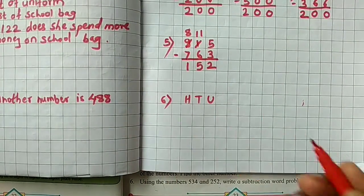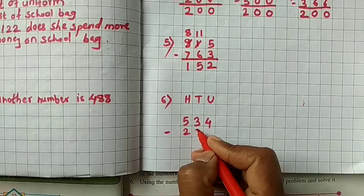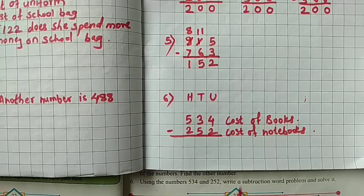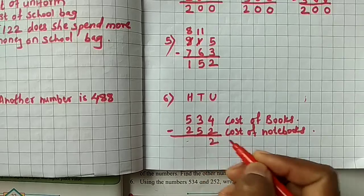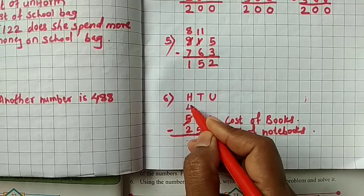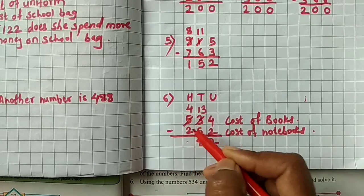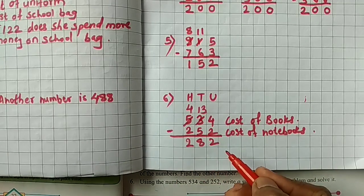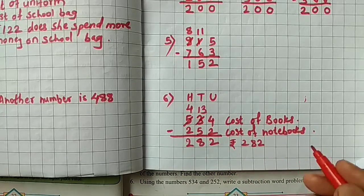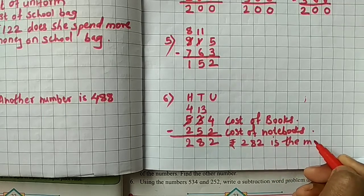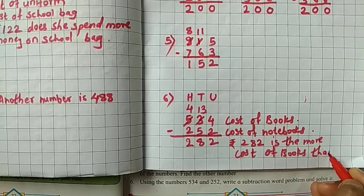Here, hundreds tens units. Now 534 minus 252. So 534 cost of books and 252 cost of notebooks. Let's do subtraction. 4 minus 2 we get as 2. 3 minus 5 it is not possible, that's why we are taking borrowing. Here 4, here 13. So 13 minus 5, how many? 8. And 4 minus 2 we get as 2. So 282 is the more cost of books. Rupees 282 is the more cost of books than notebooks.